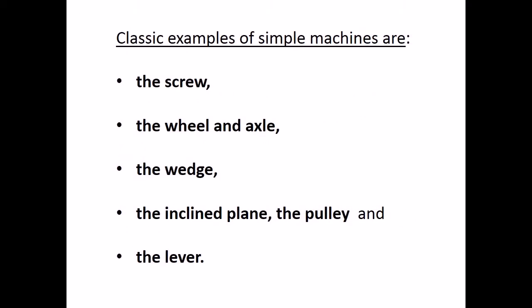Classic examples of simple machines are the screw, the wheel and axle, the wedge, the inclined plane, the pulley, and the lever.